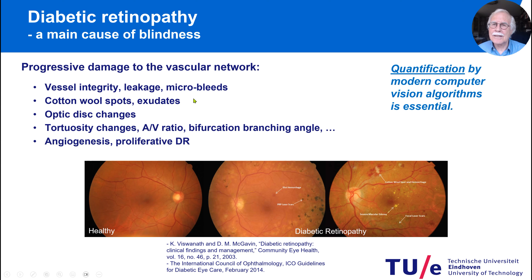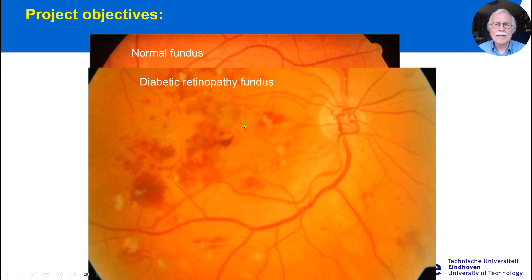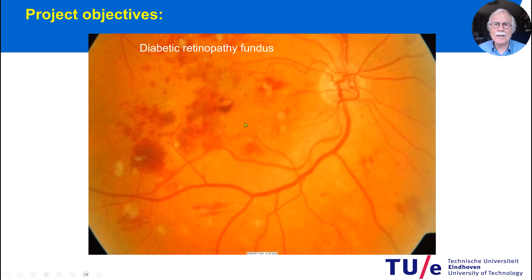Quantification was crucial. Can we really see, at a very early stage, what happens with these vessels? Here we see a normal fundus with quite intricate vessel detail, and this is a diabetic retinopathy fundus. You can see all kinds of small deposits — how can you quantify the number, the area, and the texture of these deposits?